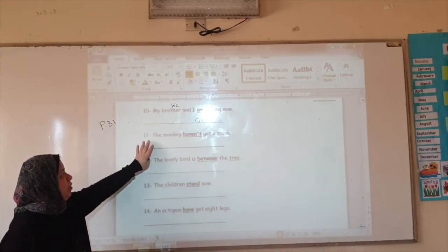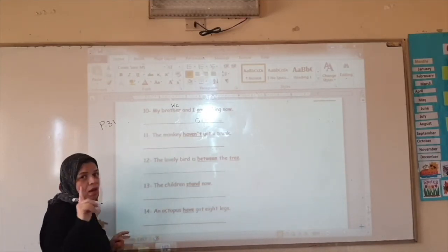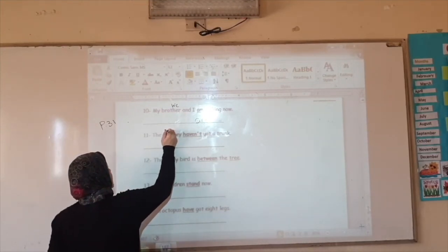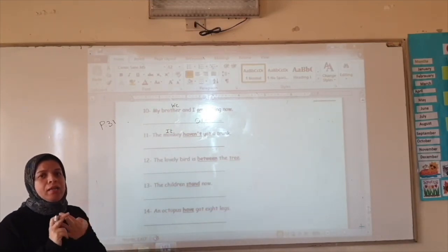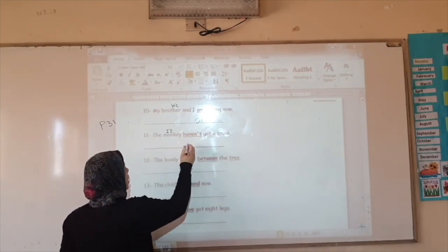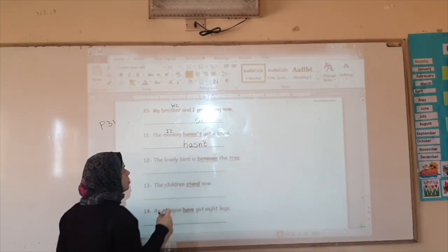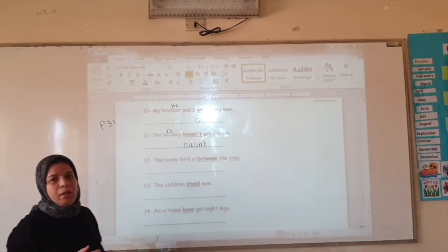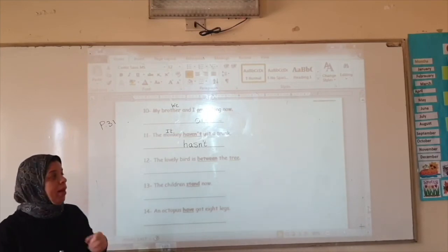Number eleven. The monkey. Do I have one or many? I have one. So I'm going to write it. What do I use for it? Do you remember? He, she, it has. So I'm going to say has. Instead of have, I write has. Has got a trunk. Because the only animal that has got a trunk is the elephant.